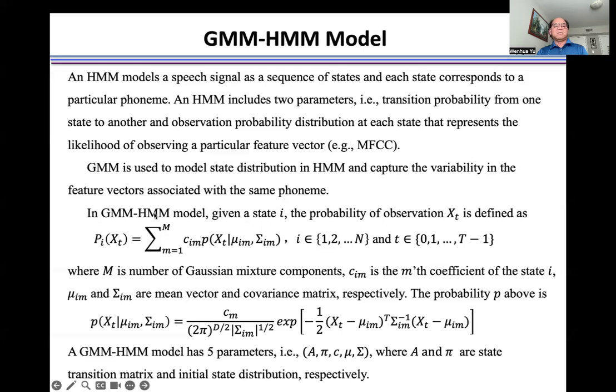In GMM-HMM model, given a state i, the probability of observation X_t is defined as the weighted sum here, where M is the number of Gaussian mixture components, C_mi is the m-th coefficient of the state i.